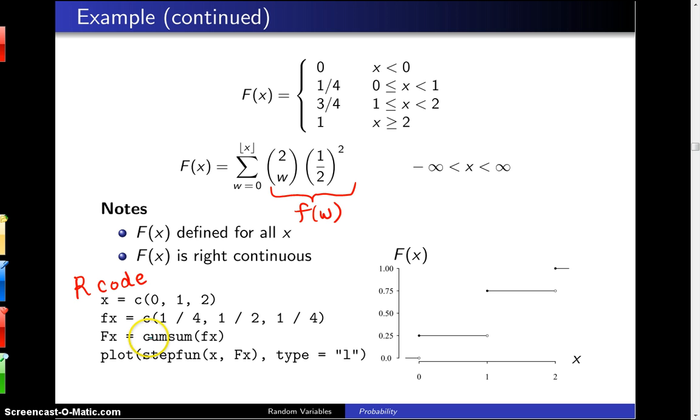And then we use a function here, cumsum, which stands for cumulative sum. And apply that to little f of X, and that will give us the function capital F of X, which is going to be 1 fourth, 3 quarters, and 1.